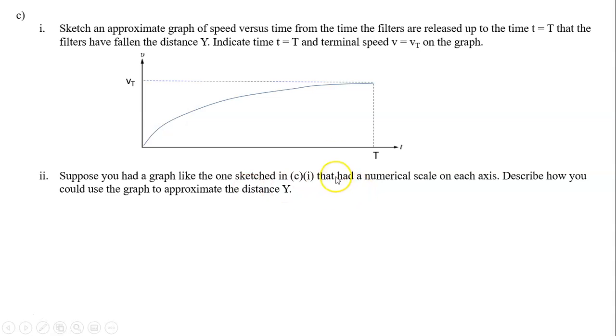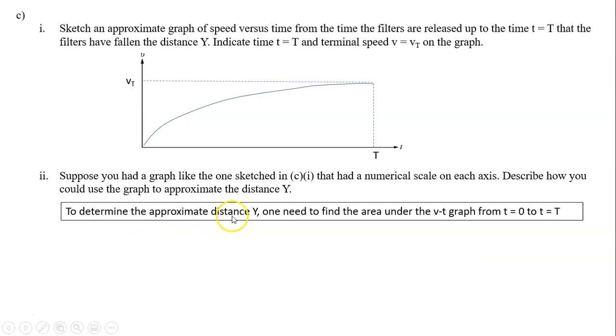Suppose you had a graph like the one sketched here and had a numerical scale on each axis. Describe how you could use the graph to approximate the distance y. In the v-t graph, the area under this graph is y. So to determine the approximate distance y, one needs to find the area under the v-t graph from t equals zero to t equals T. So this area is the distance.